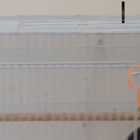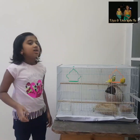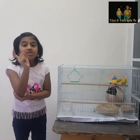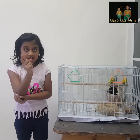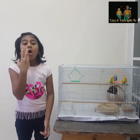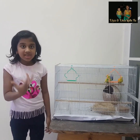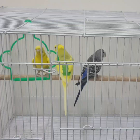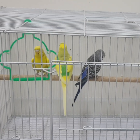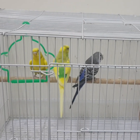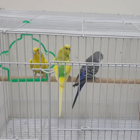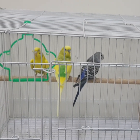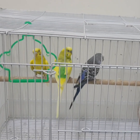One is green, the other one is orange. Did you see my birds? How many birds are there? Count with me. One, two, three. There are three birds.